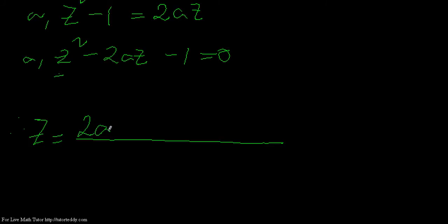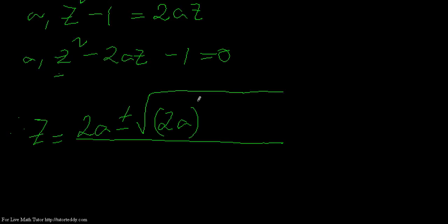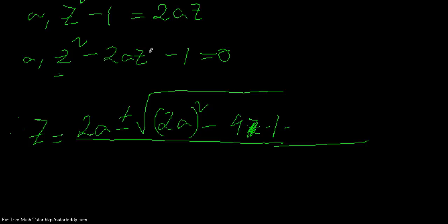So we have z equals 2a plus or minus root over: b squared — that is 2a whole squared — minus 4ac, where 4 into the coefficient of the first term (which is 1) into the coefficient of the third term (which is minus 1), all divided by 2 into the coefficient of the first term, which is 2 into 1.